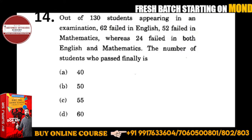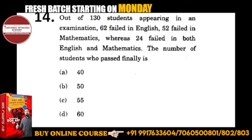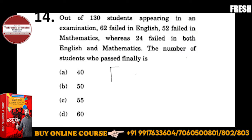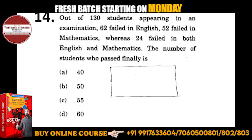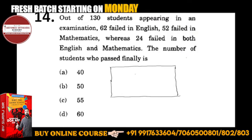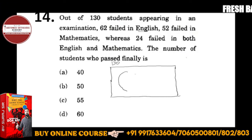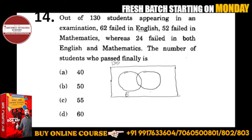So how do we do this? Let me draw a Venn diagram for you. If a child doesn't understand, don't panic - there is no need to worry. There are a total of 130 students. I will draw English and Mathematics sets: this circle is for English and this one is for Mathematics. I will label them E and M.